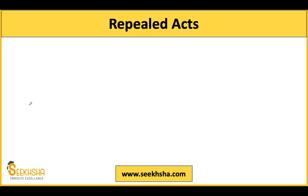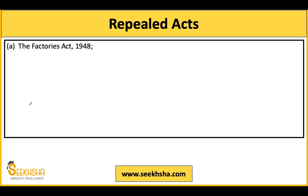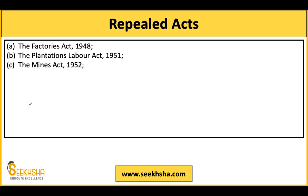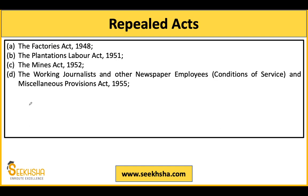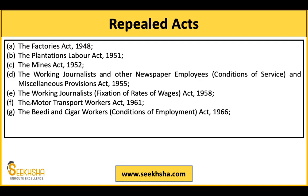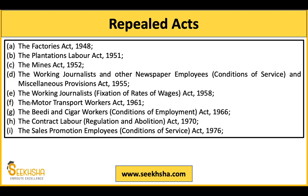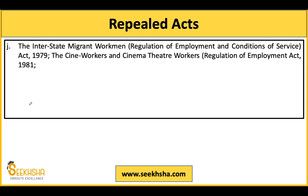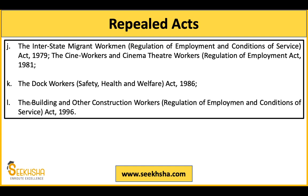With the implementation of this code, the following acts stand repealed: Factories Act 1948, Plantation Labour Act 1951, Mines Act 1952, Working Journalist and Newspaper Employees and Miscellaneous Provision Act 1955, Working Journalist Act 1958, Motor Transport Workers Act 1961, Bidi and Cigar Workers Act 1966, Contract Labour Act 1970, Sales Promotion Employees Act 1976, Interstate Migrant Workmen Act 1979, Cine Workers and Cinema Theatre Workers Act, Dock Workers Act, and Building and Other Construction Workers Act.